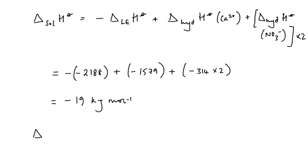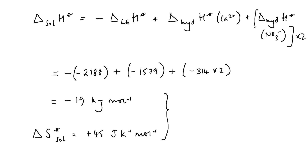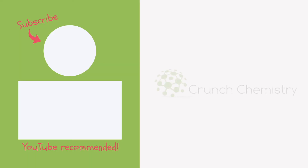We can also look up the entropy change of solution for calcium nitrate, which turns out to be +45 J/K/mol — positive, which is also favourable. So when we put both factors together, calcium nitrate is readily soluble in water. If this has been useful, hit the subscribe button — the effortless way to support your studies — and clicking the link in the description will take you to the Crunch Chemistry School where you'll find all the resources you need to get that A* grade at A-level.